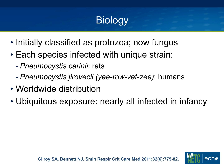Pneumocystis was initially thought to be a protozoa because it has cyst, trophozoite, and sporozoite forms. In the late 1980s, it was definitively classified as a fungus based on cell wall structure and genetic analyses. Each mammalian species is infected with a unique strain. Pneumocystis carinii now refers to the form that infects rats, while pneumocystis jirovecii is the species that infects humans. It is still acceptable to refer to it as PCP for pneumocystis pneumonia, and you'll also see PJP in the literature.